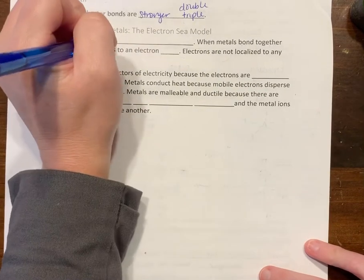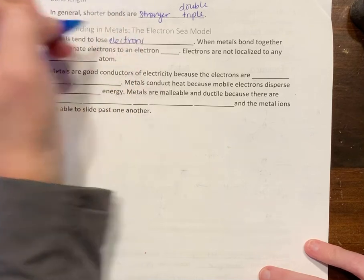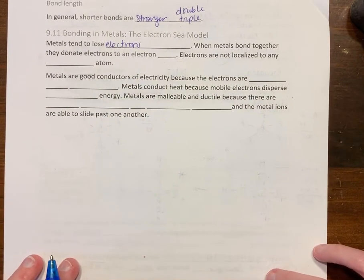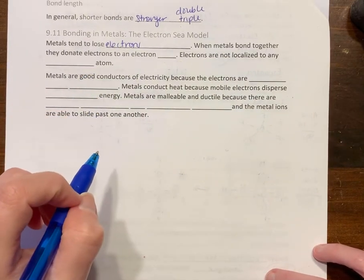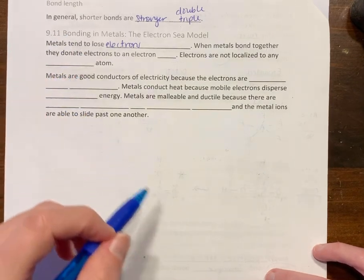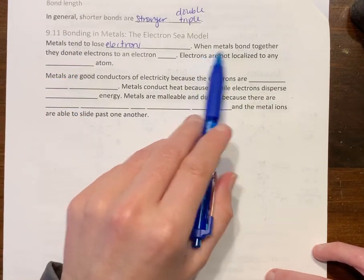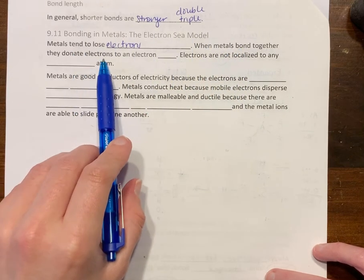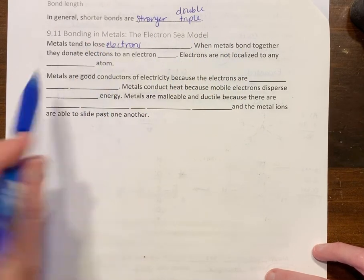Metals lose electrons. Metals form positive cations—that's redundant—positive ions. Metals make cations, they have positive charges, they lose electrons. When metals bond together, they donate these electrons that they're losing.